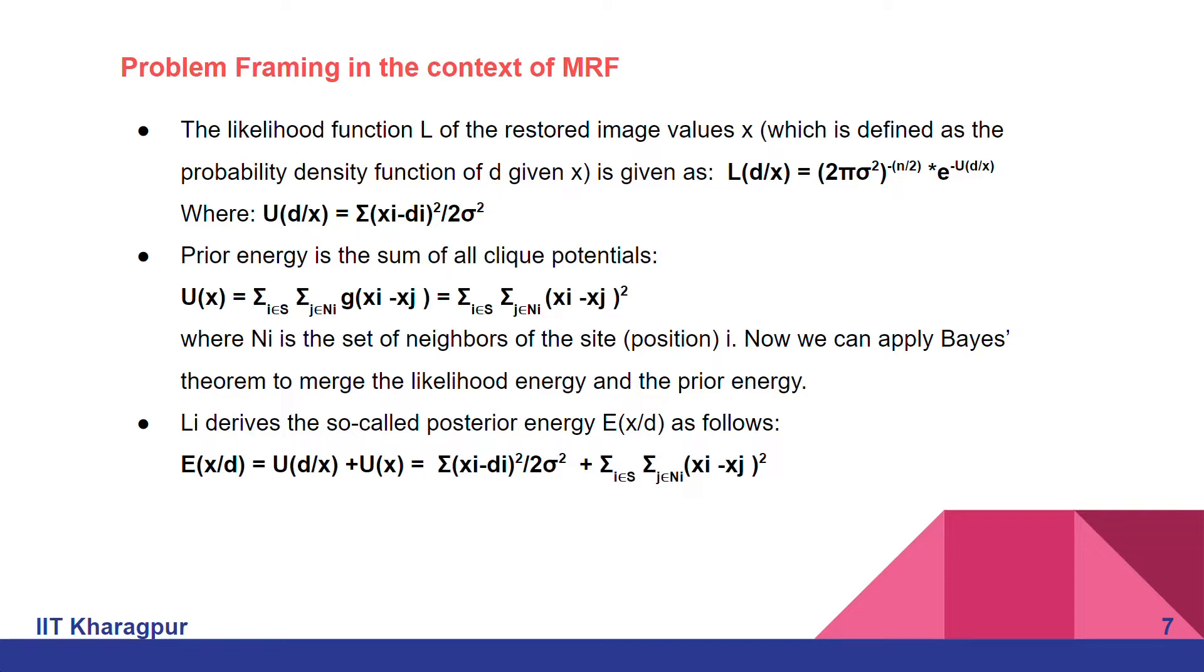Now we apply the Bayes theorem to merge the likelihood energy and the prior energy. The posterior energy U of X given D is a summation of two parts: the first one is U of D given X that we discussed first, and next is the prior energy U of X.